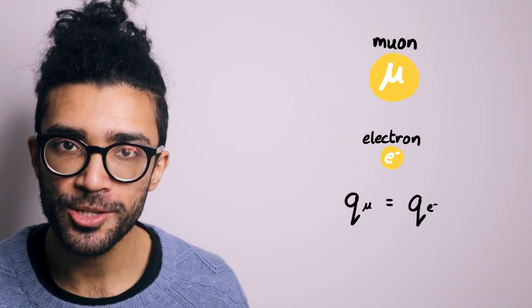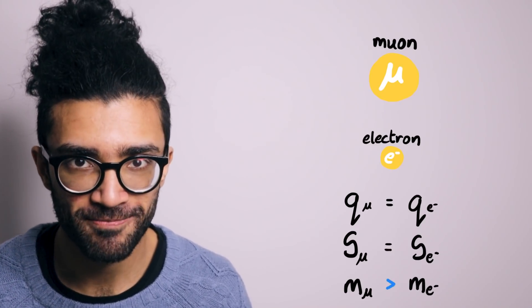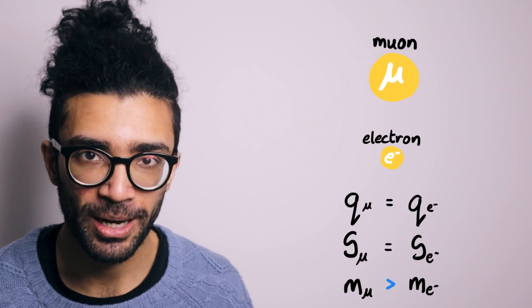A muon is very similar to an electron. Same charge, same spin, same everything, except its mass. The mass of a muon is larger than the mass of an electron.